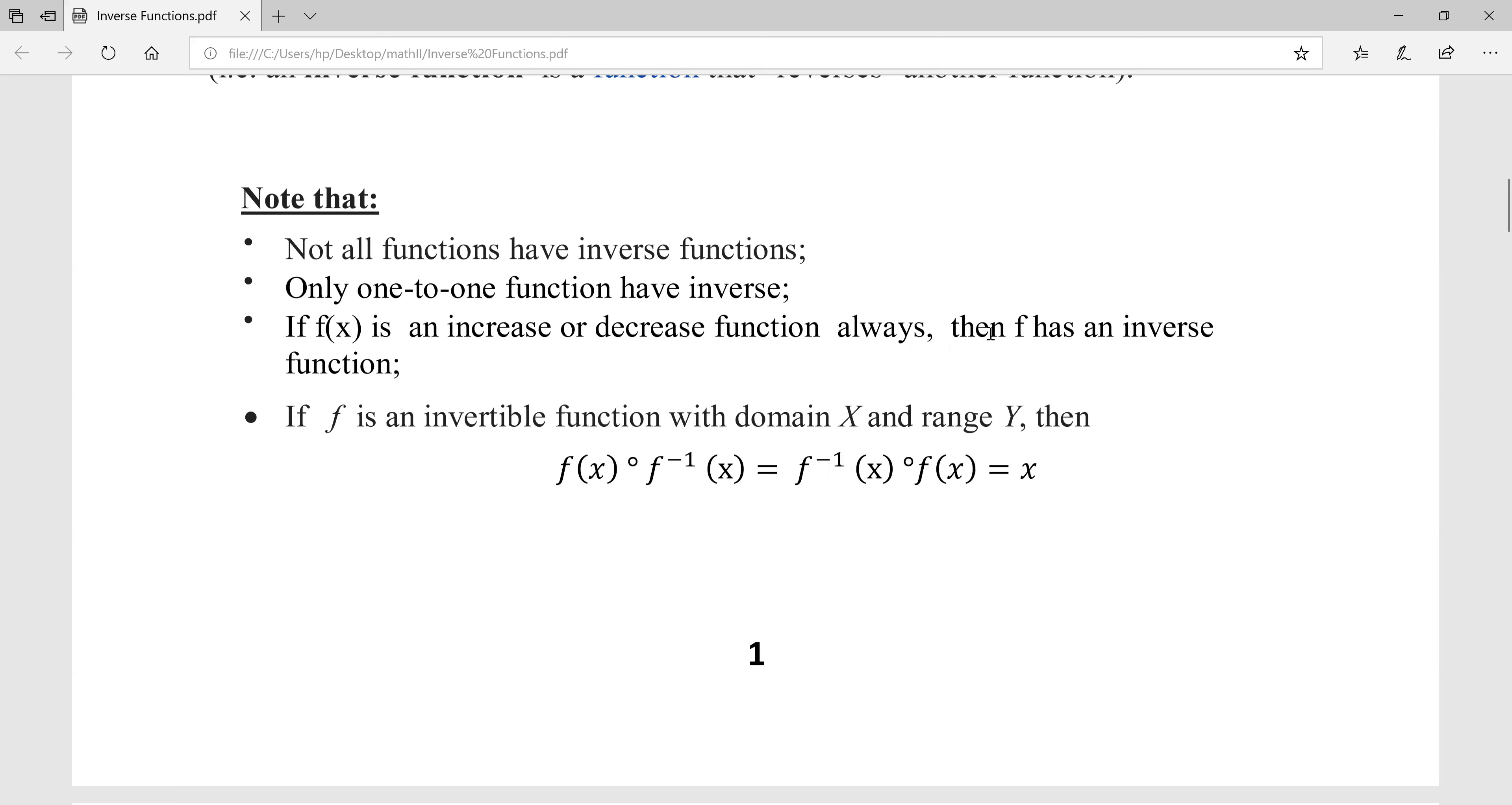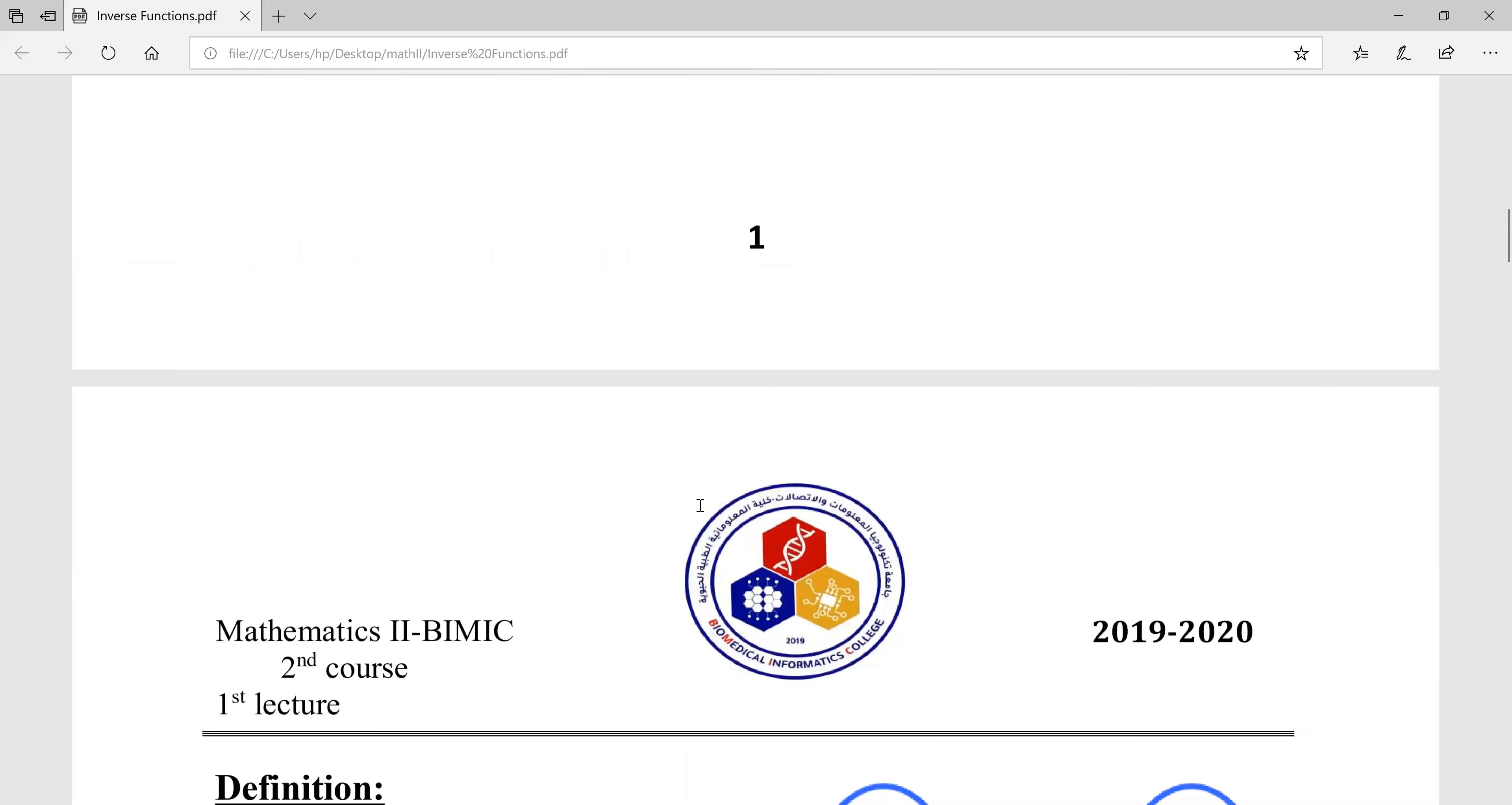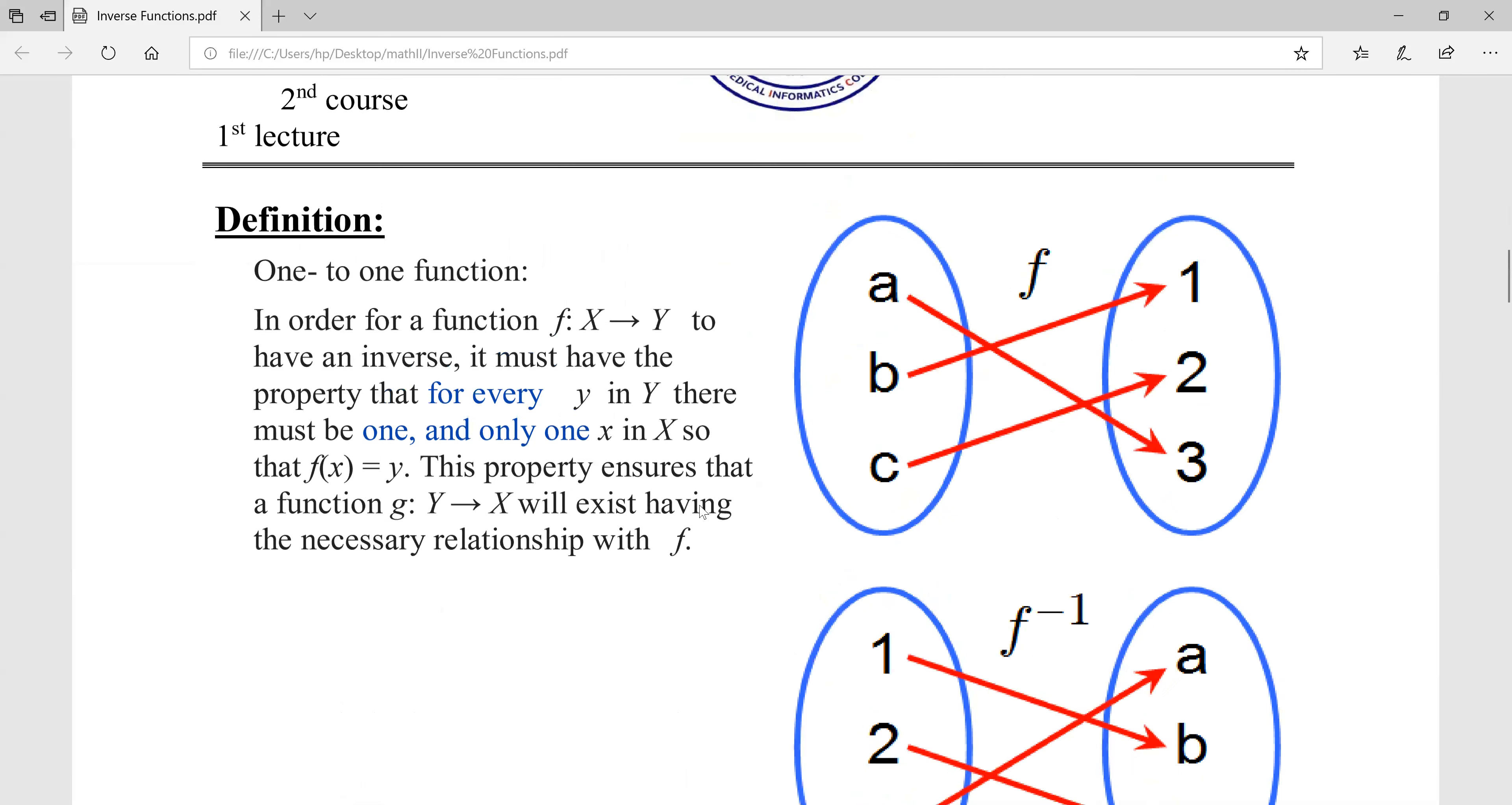Only one-to-one functions, which increase or decrease always. If f is an invertible function with domain X and range Y, then if we are using f(x), the inverse f^(-1)(x) must be one-to-one.